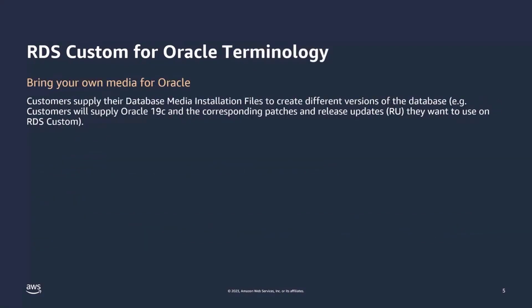I wanted to cover some high-level terminology specific to RDS Custom to give you a better idea of how it works. The first is bring your own media. Instead of Amazon providing the installation files, you'll actually be doing that yourself. You'll go to Oracle's website and download Oracle 19c, 12c, or whatever version you want to use. If there are any specific release updates, patch set updates, or one-offs you want to apply to your Oracle EBS database, you would download those too.